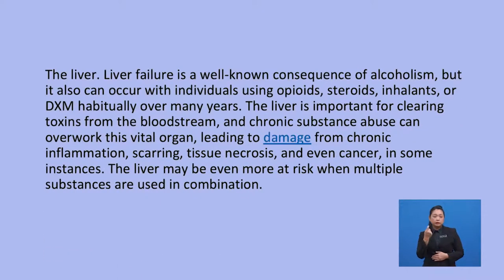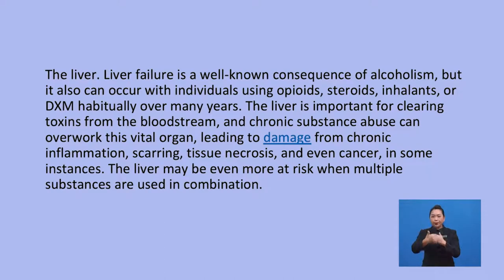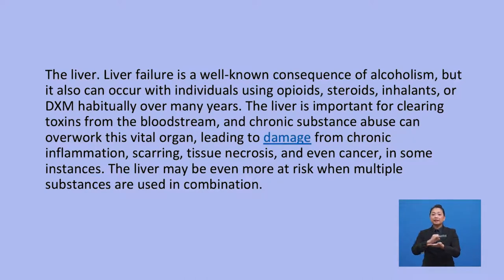The second organ is the liver. Liver failure is a well-known consequence of alcoholism, but it can also occur with individuals using opioids, steroids, inhalants, or DXM habitually over many years. The liver is important for clearing toxins from the bloodstream, and chronic substance abuse can overwork this vital organ, leading to damage from chronic inflammation, scarring, tissue necrosis, and even cancer in some instances. The liver may be even more at risk when multiple substances are used in combination.